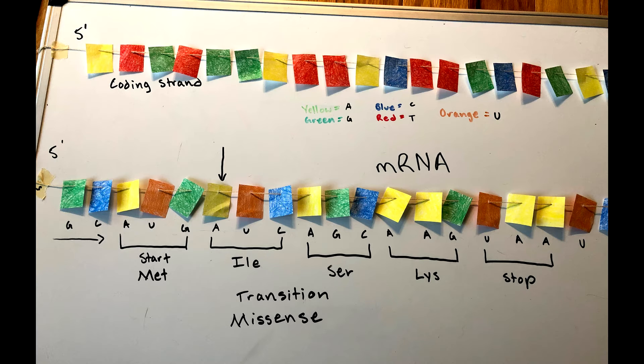Another type of change is called a transversion. A transversion is when a purine is changed to a pyrimidine, or vice versa. The type of mutation shown where a point mutation changes the resulting amino acid is called missense.